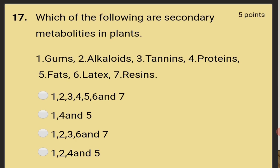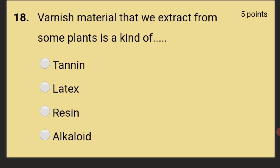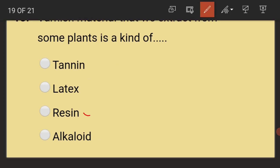Which of the following are secondary metabolites in plants? The answer includes gums, alkaloids, tannins, latex, and resins. Varnish material that we extract from some plants is a kind of resin.